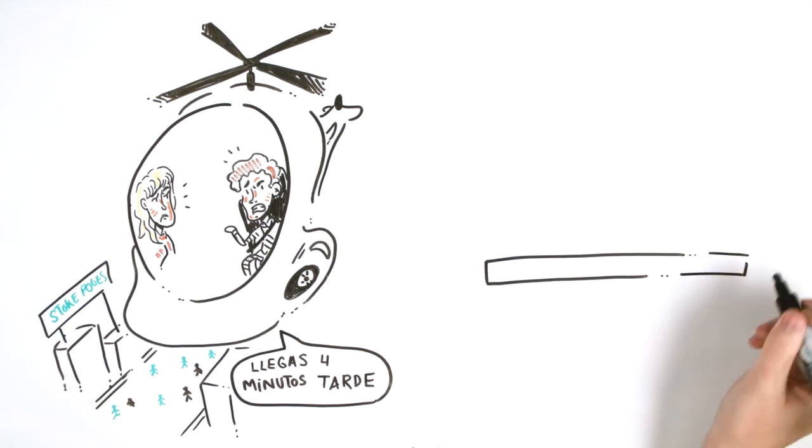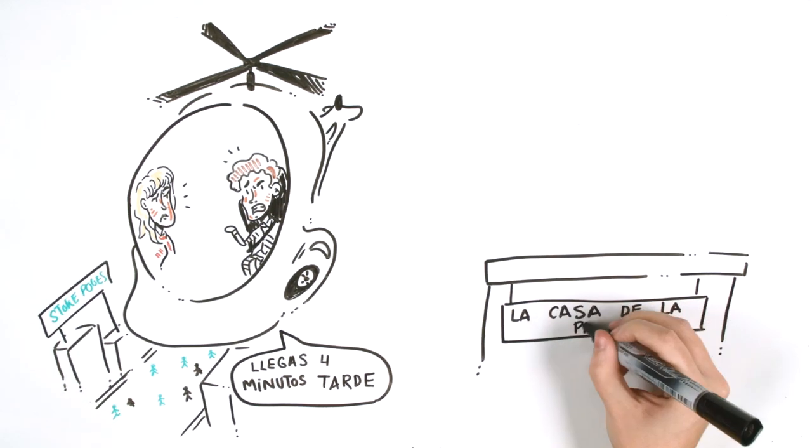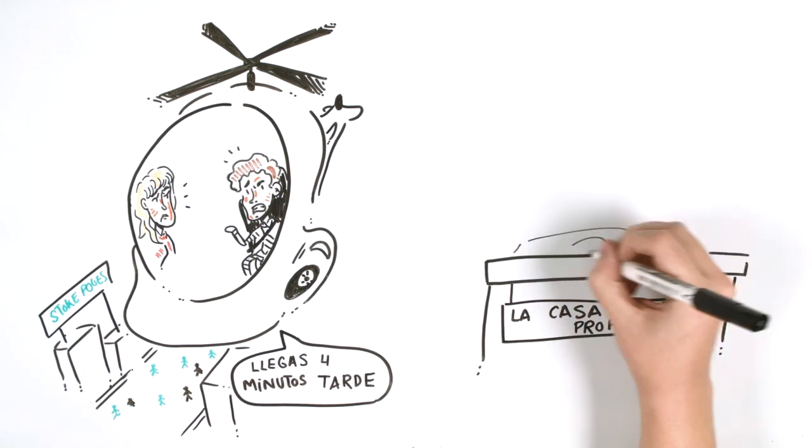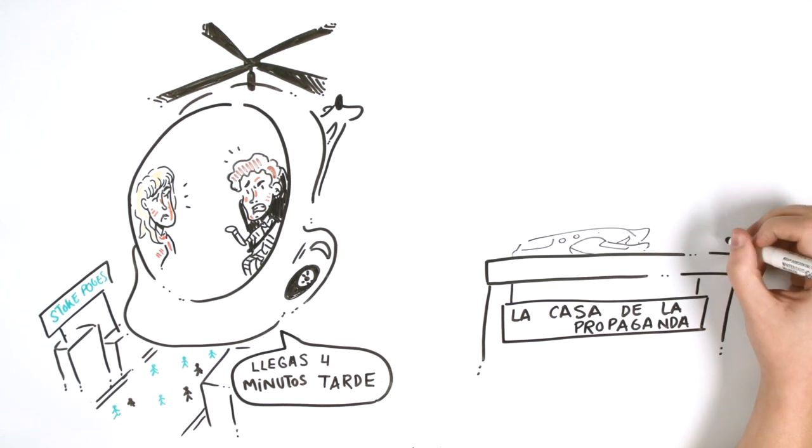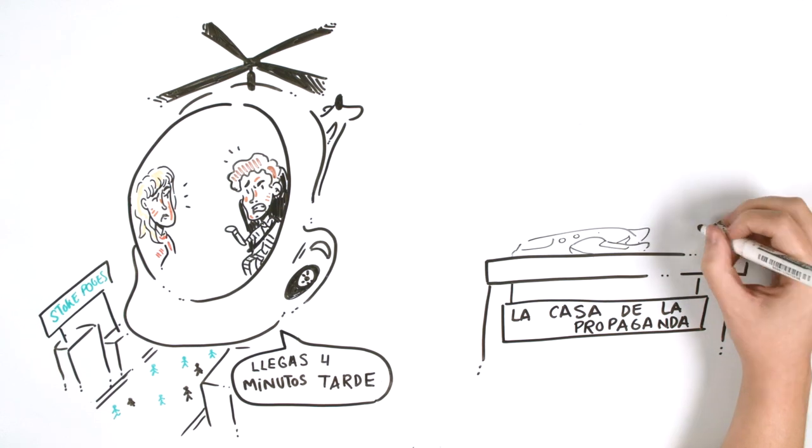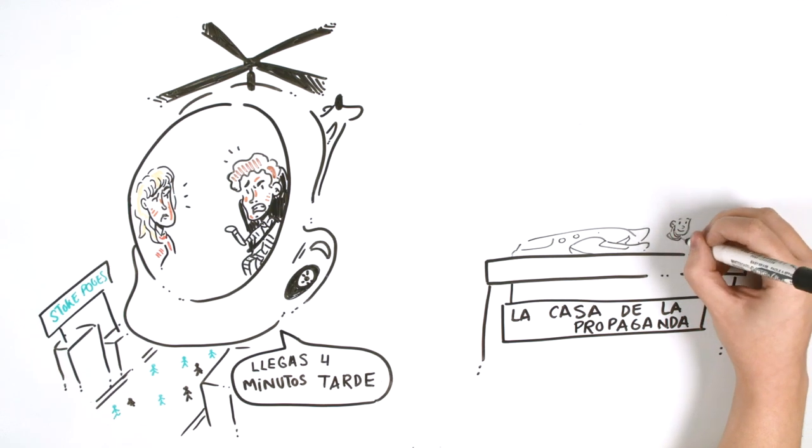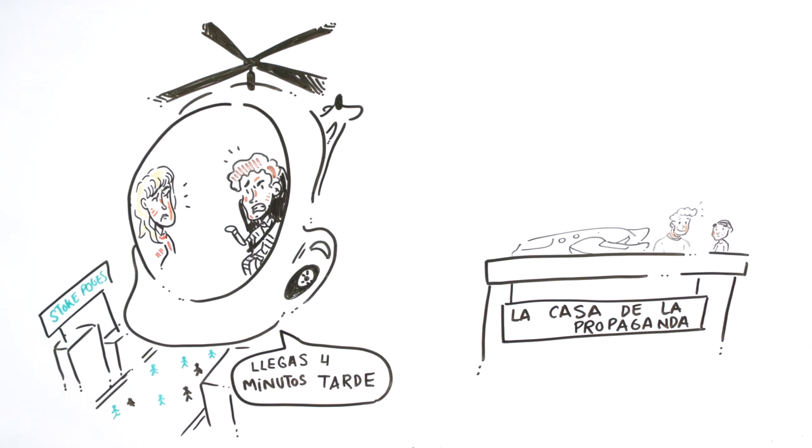Once at the propaganda house, Bernard met Helmholtz Watson, a professor at the School of Emotional Engineering. More genuine, he was the perfect example of an Alpha. According to his superiors, he was too competent, so he had the same obstacles as Bernard with his appearance. They understood each other too.